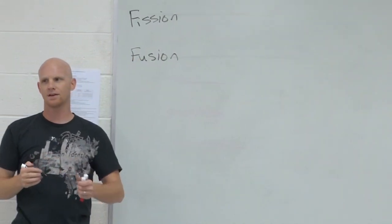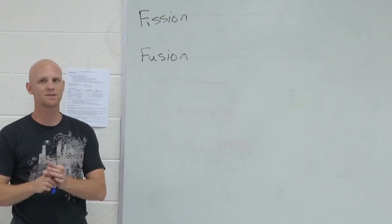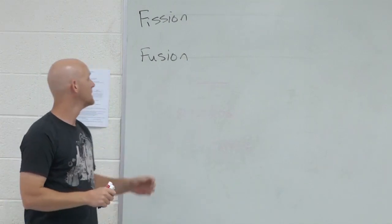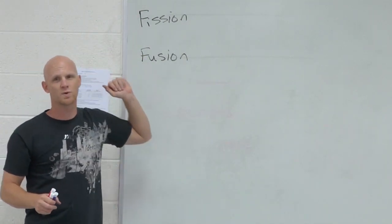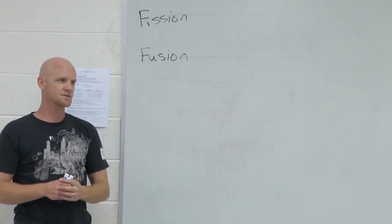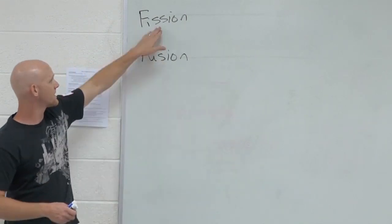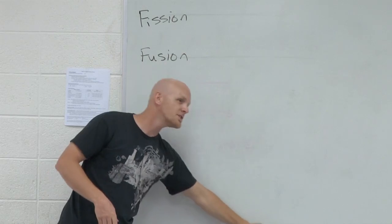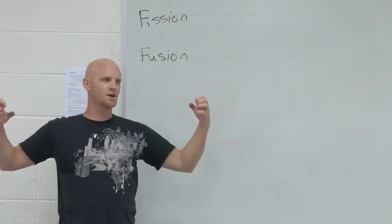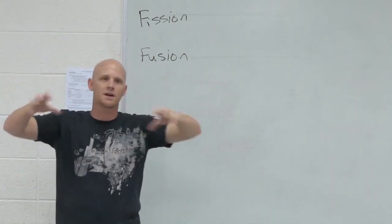Two types of nuclear reactions that can be used for purposes of releasing mad amounts of energy. Fission and fusion. Which one do we do on planet Earth in our nuclear reactors? Fission. If you think of the word fission, fission is the splitting apart. It's when you take a large nucleus and break it up into smaller nuclei.